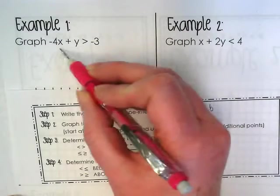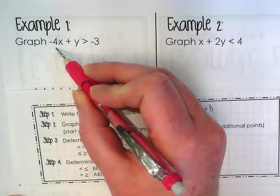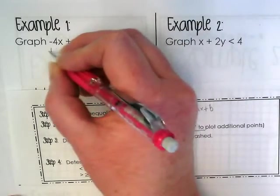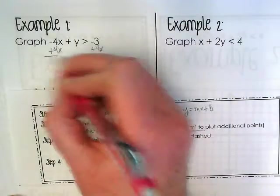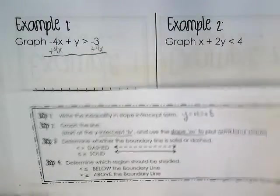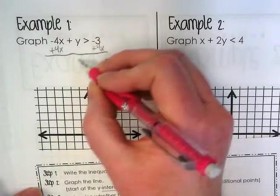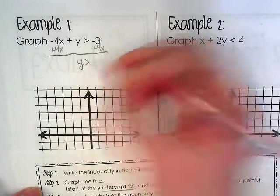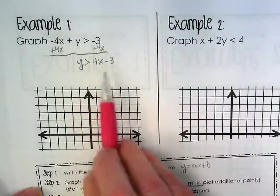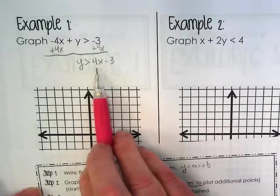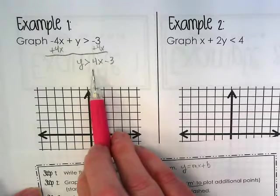Right now, what's on the left side of the inequality with it is this negative 4x. So what do we want to do? We're going to add 4x to both sides. That's going to leave us with y is greater than 4x minus 3. Notice I put the 4x first because we're putting this in slope-intercept form.